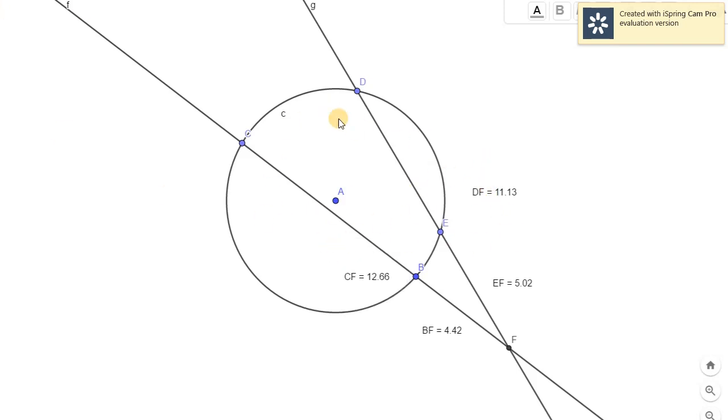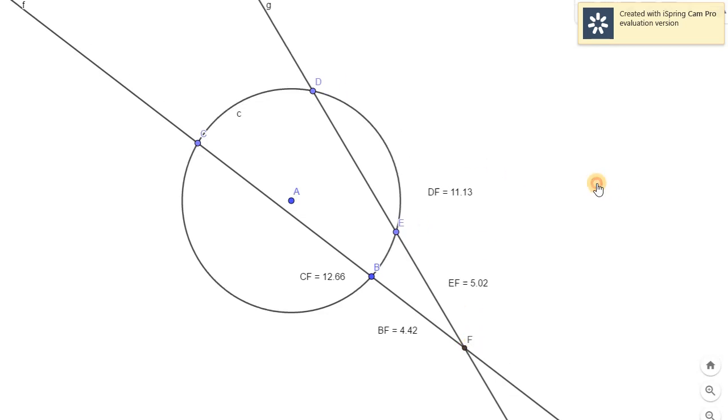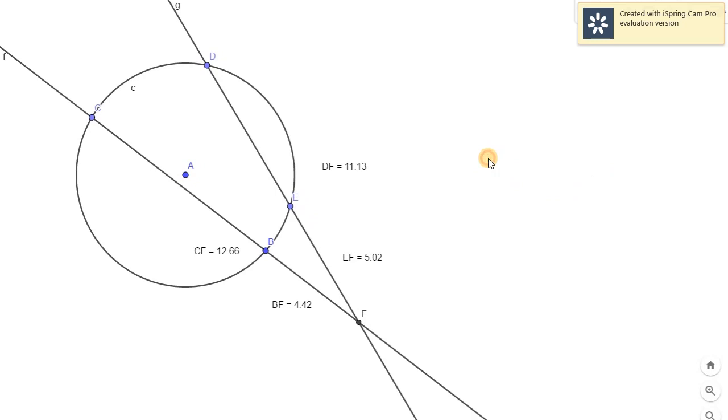So ang sabi daw dito, let's say we have this given circle A, and we have segment DE, and we have segment CD inside the circle, and this segment EF and segment BF outside the circle, and we have the segment FD as an entire secant.